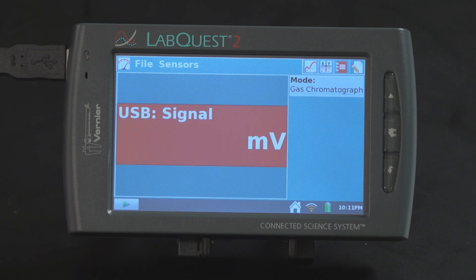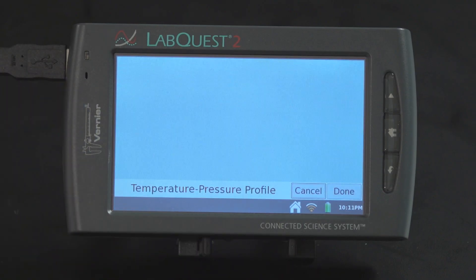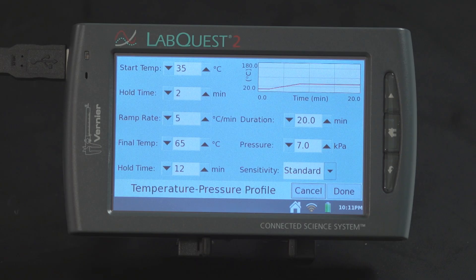Tap on Collect to bring up the temperature pressure profile. Depending on your sample, you may need to modify these parameters to obtain good separation. For this sample mixture, change the pressure to 4 kPa.